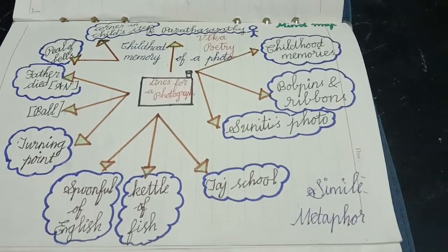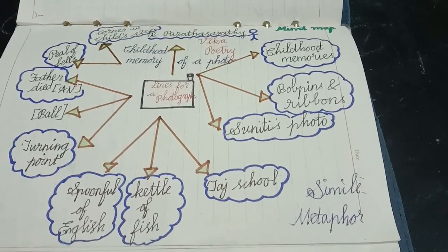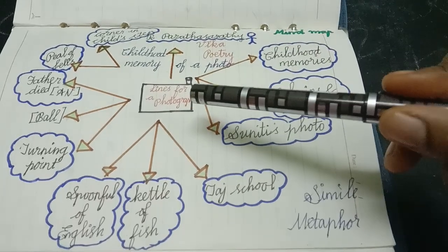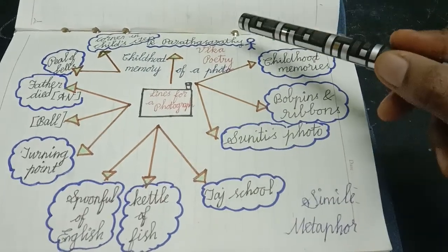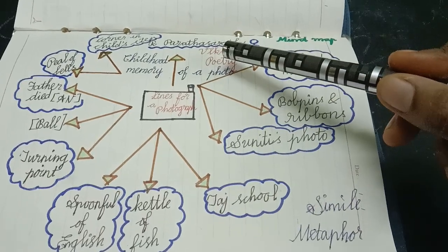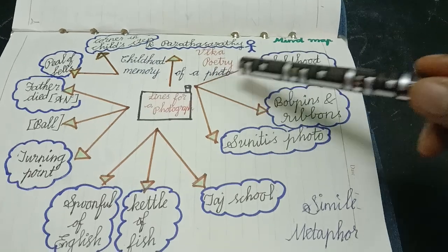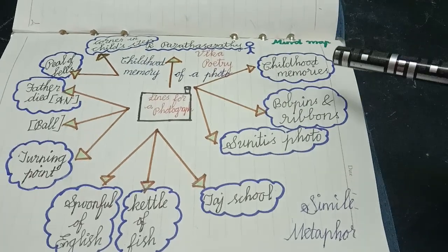Hello everyone, welcome to today's video. Today we are going to see a mind map for the poem Lines for a Photograph by R. Parthasarathy. The poem is about a photo. The photo shows childhood memories, poppins, and ribbon.